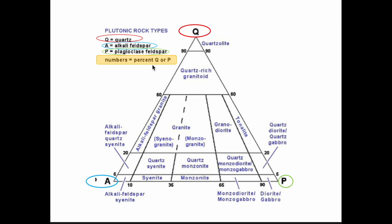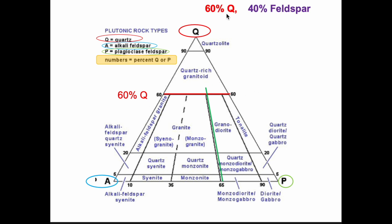The numbers only tell us the percent quartz or percent plagioclase of the total feldspar — they tell us nothing directly about alkali feldspar. So let's take a second. That line right there — hopefully you're going, hmm, 60% quartz? And you'd be correct. Now this line right here, you might go, well, that's 65% plagioclase. But 60% plus 65% is too much — how can that be? Well, this is the percent plagioclase of the total feldspar. So if this line tells us it's 60% quartz, 100 minus 60 means roughly 40% of the remaining minerals are feldspar. So this 65 is 65% of that 40%. These numbers of percent plagioclase are of the total feldspar — that's a very important piece here.